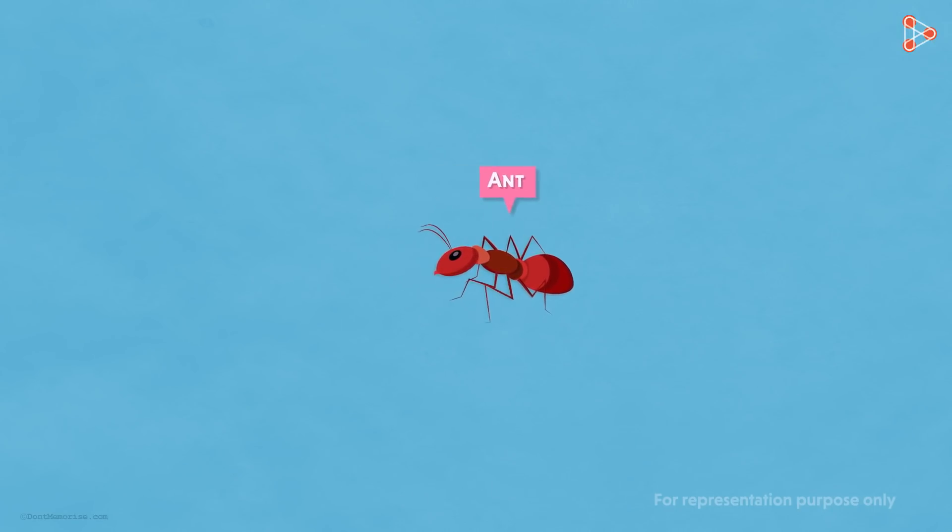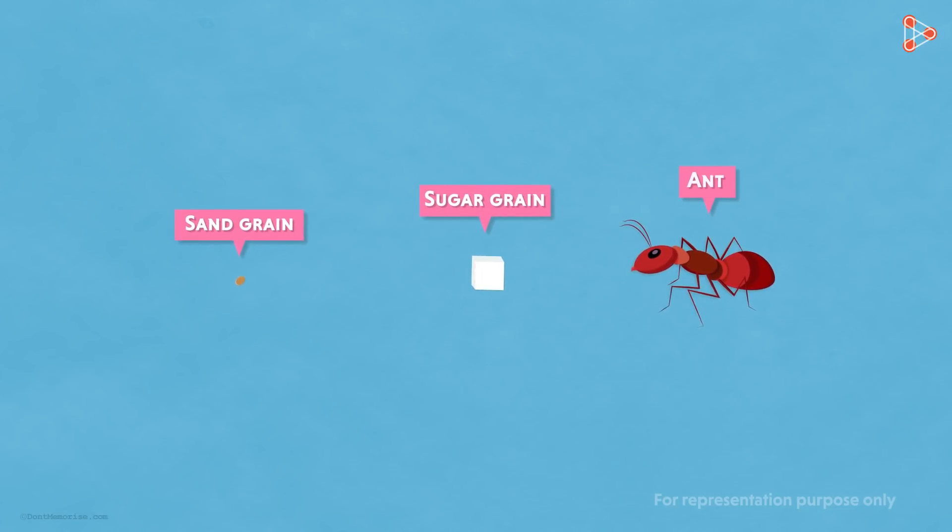Okay, so ants carry little grains of sugar. It means grains are smaller than ants. So maybe we can take a grain of sugar. How about a sand grain which is smaller than the grain of sugar? But we can still see a grain of sand with our naked eyes. So can you tell me something smaller than this?